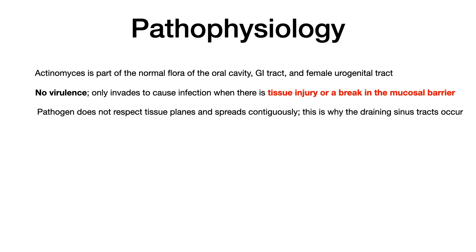Draining sinus tracts, yellow sulfur granules — these terms are used relatedly and interchangeably because Actinomyces does not respect tissue planes; it will just drain out. It's a very suppurative inflammatory process with draining sinus tracts, pus, and yellow color. Bottom line: Actinomyces has no virulence factors, but because it is normal flora of different mucosal barriers, injury to those barriers causes inflammation with draining sinus tracts and yellow sulfur granules. That yellow pus aspect is the most high-yield.